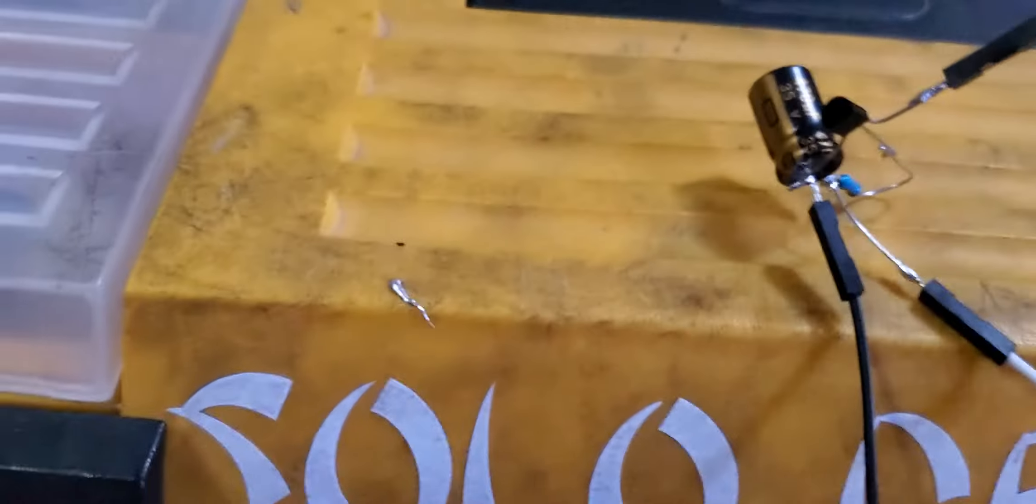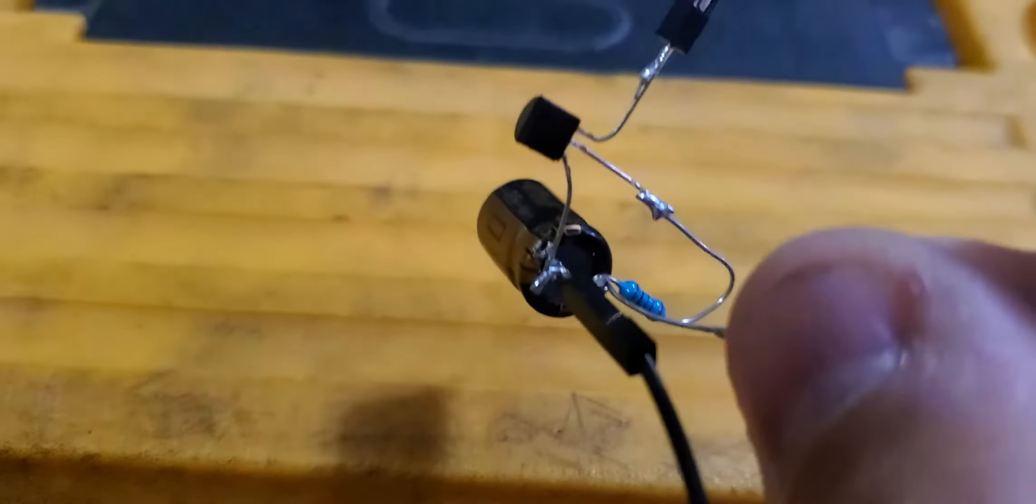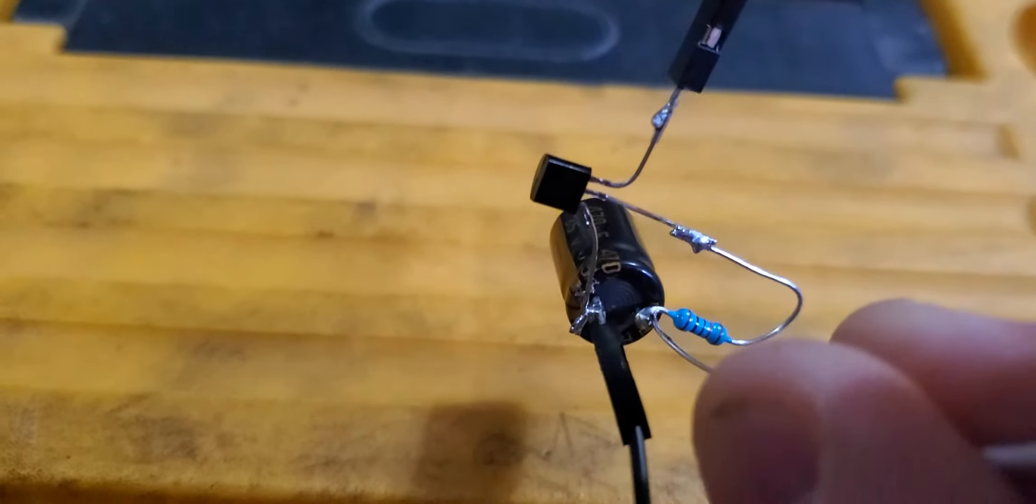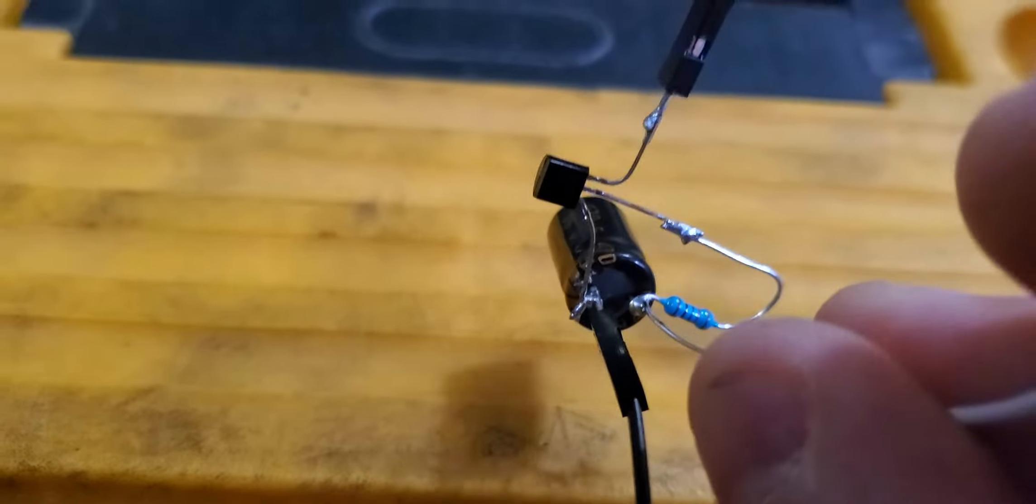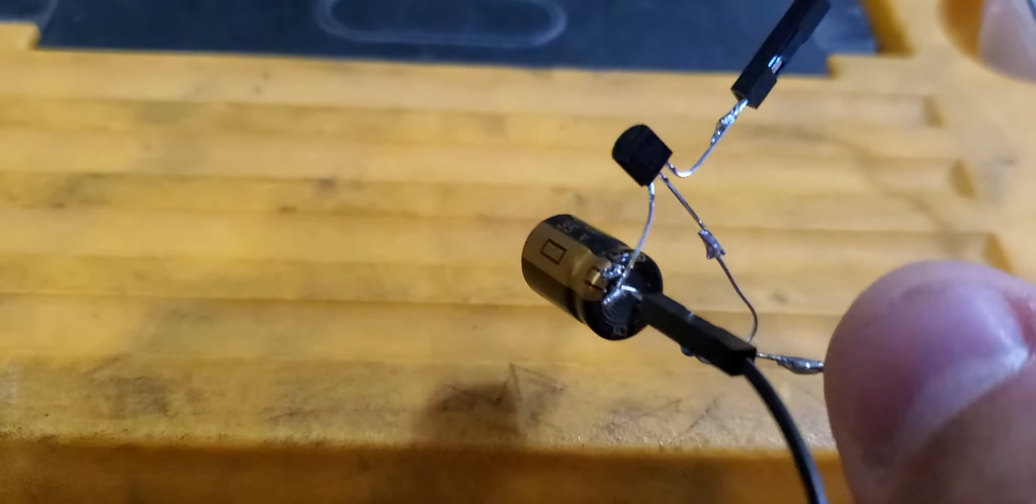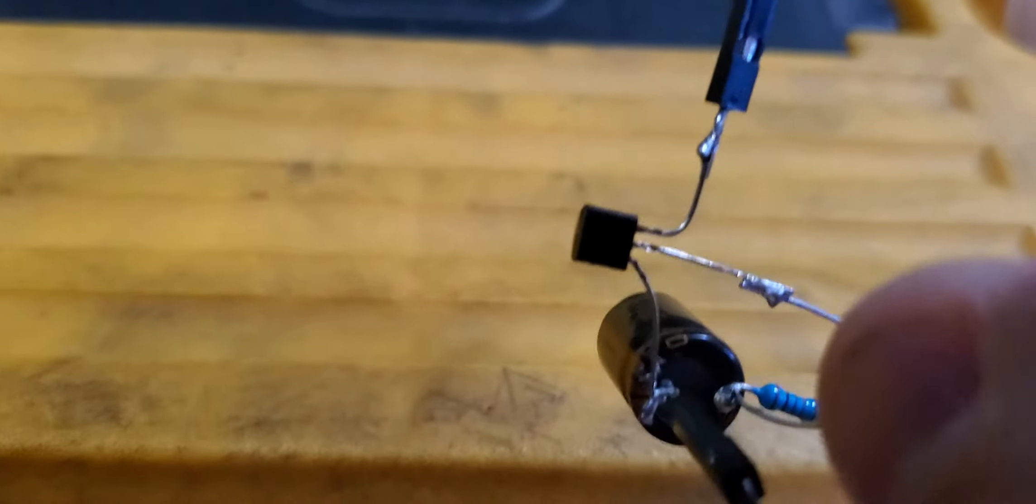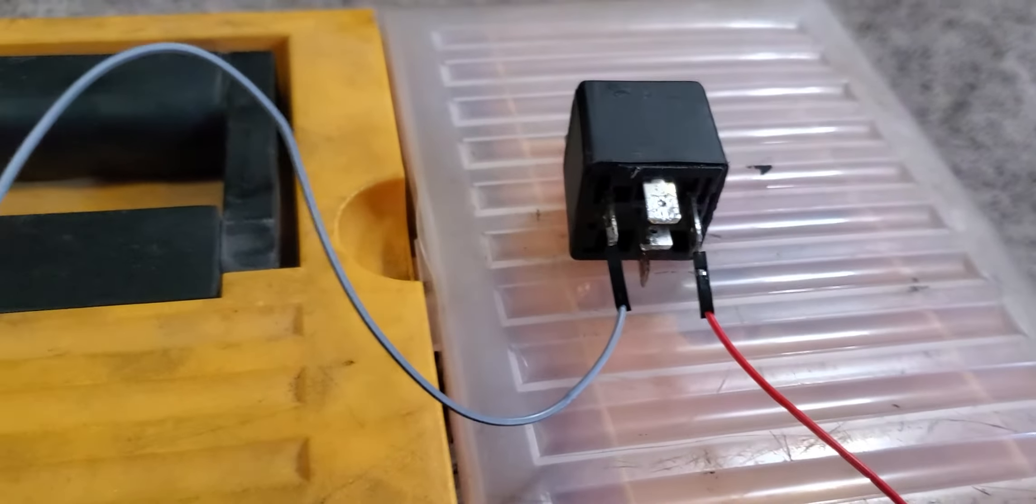So what I have here is a 470 microfarad capacitor and an NPN transistor. Essentially what happens is when power gets put to the coil, it charges up the capacitor. Then when you turn the key off, the capacitor keeps the NPN transistor open, which keeps the coil on the relay energized.